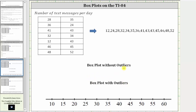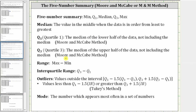Before we take a look at this, we do need to be aware of how the TI-84 calculates quartile one, quartile three, as well as the outliers. The TI-84 uses the Moore and McCabe method to determine quartile one and quartile three, where quartile one is the median of the lower half of the data not including the median, and quartile three is the median of the upper half of the data not including the median. This does assume the data is ordered from least to greatest.